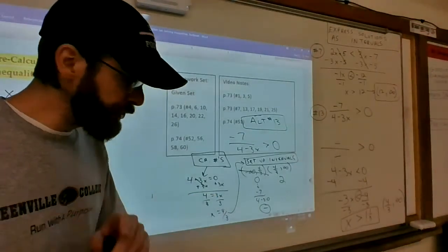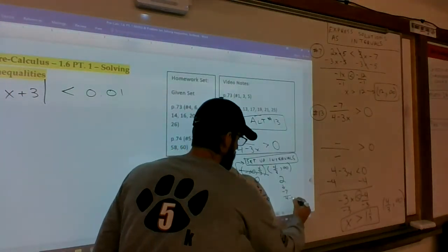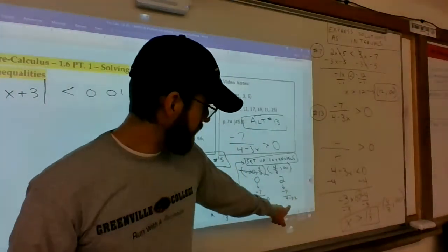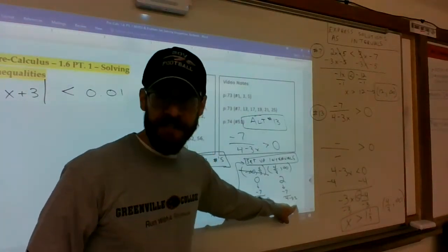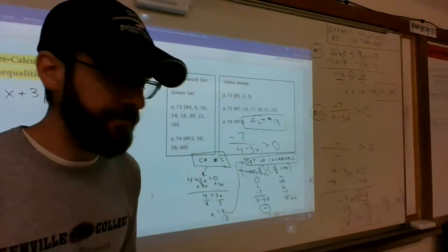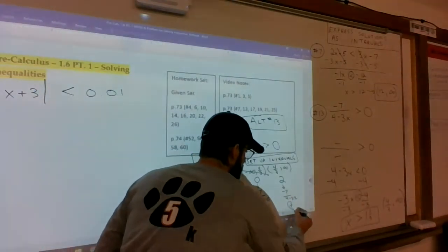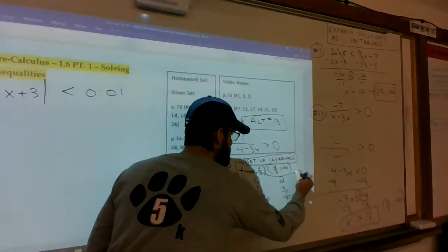But if you plug in 2, you get 3 times 2 is 6. 4 minus 6 is negative 2. Negative 7 over negative 2 is positive. That is greater than zero. Therefore, this is the solution.